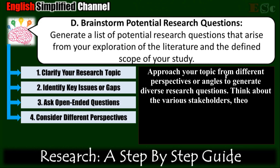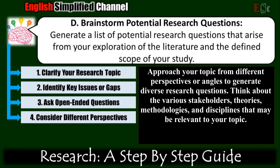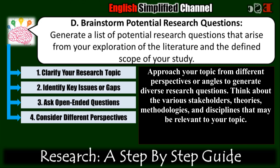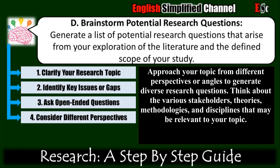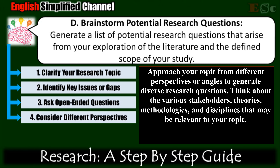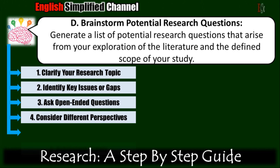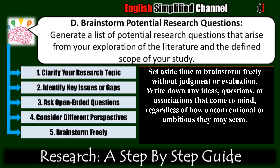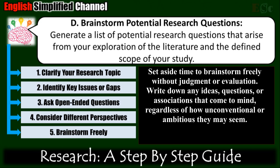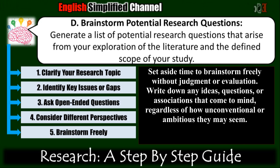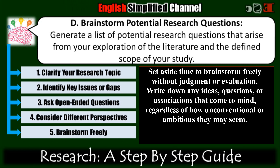Fourth, consider different perspectives. Approach your topic from different perspectives or angles to generate diverse research questions. Think about the various stakeholders, theories, methodologies, and disciplines that may be relevant to your topic. Consider how different factors, contexts, or variables might influence your research questions. Fifth, brainstorm freely. Set aside time to brainstorm freely without judgment or evaluation. Write down any ideas, questions, or associations that come to mind, regardless of how unconventional or ambitious they may seem. Use techniques such as mind mapping, free writing, or brainstorming sessions with colleagues to generate ideas collaboratively.